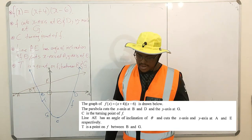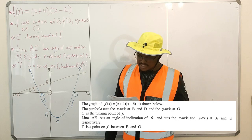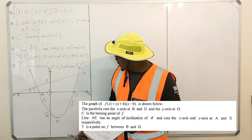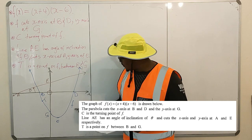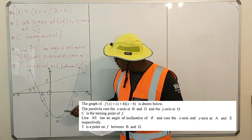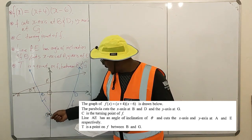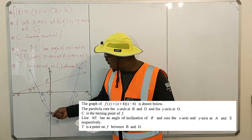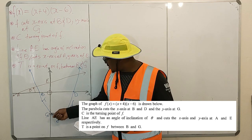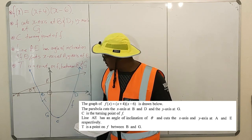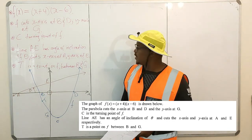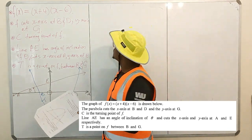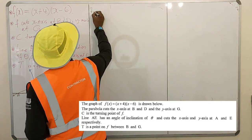T is the point on f between B and G — that is, between the y-intercept G and the x-intercept B. Now we've identified everything on the graph, so we'll go to the questions.